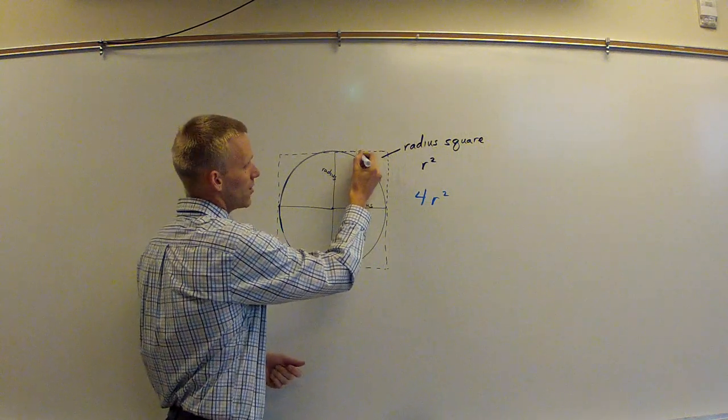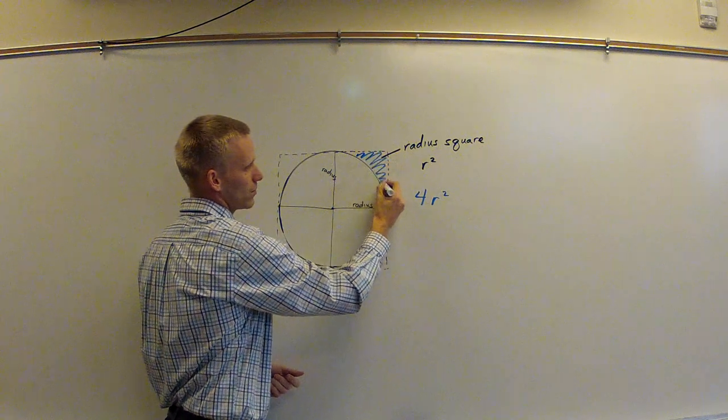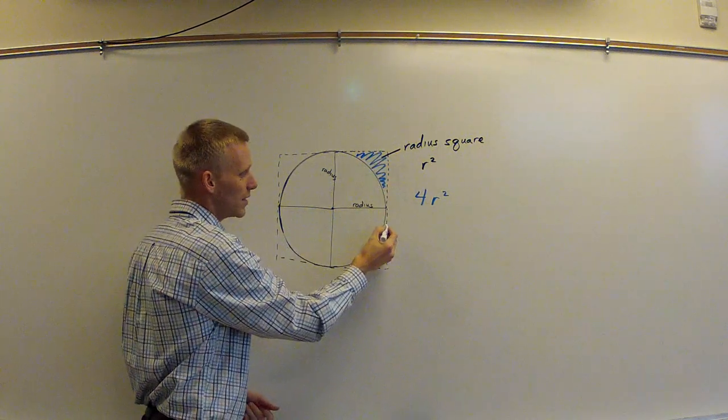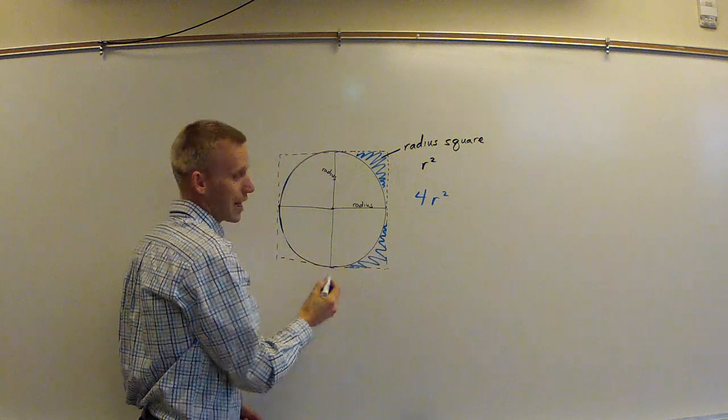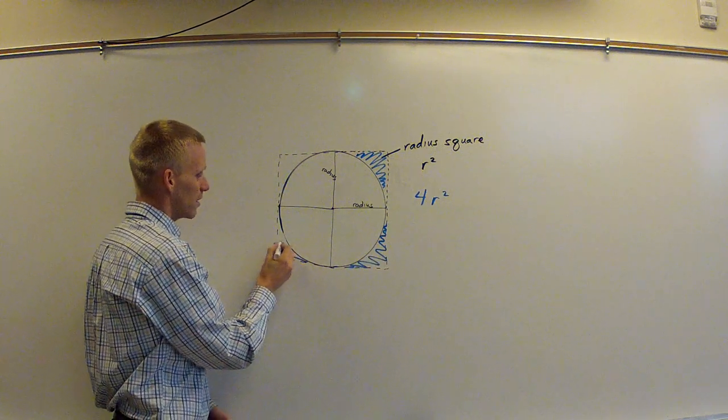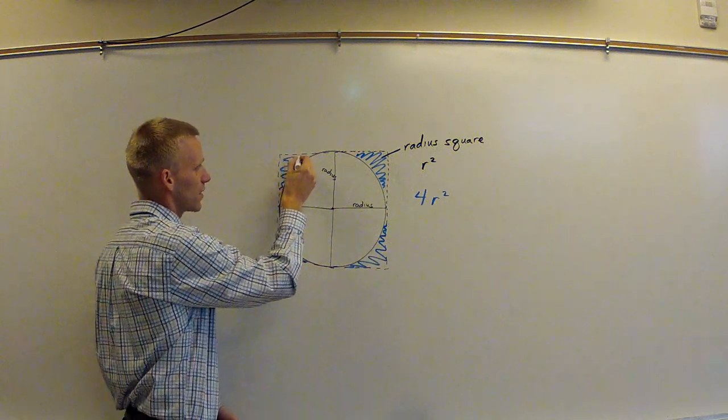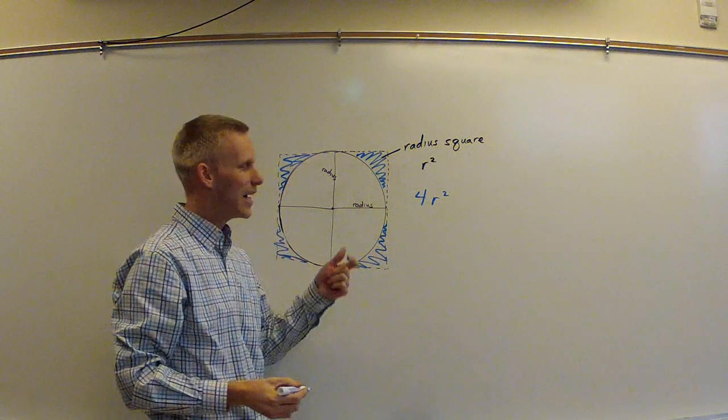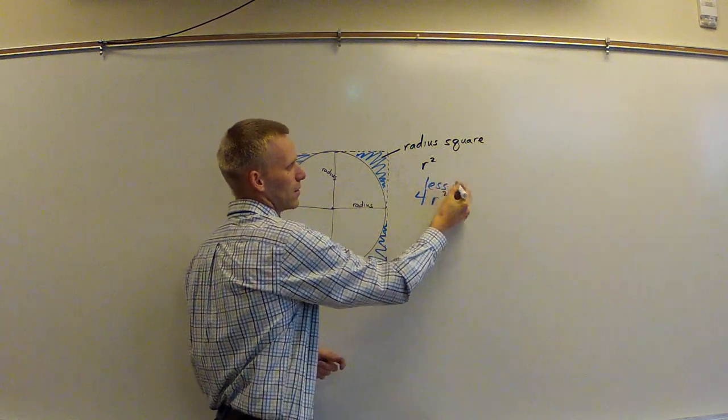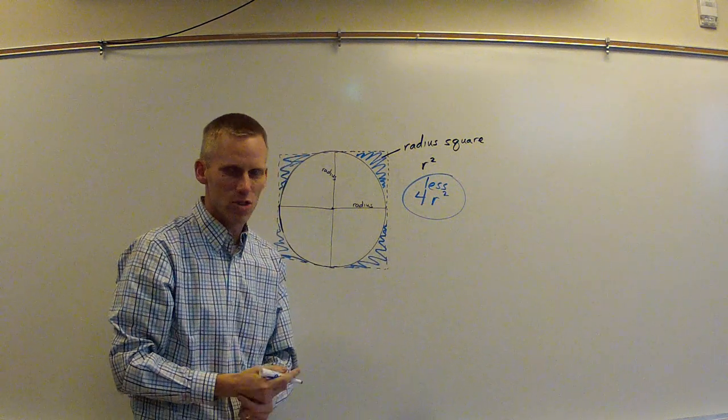Because we've included this area, which is obviously not part of the circle. We've included this area, which is not part of the circle, and this area, and this area. So obviously, it's got to be a little bit less than four radius squares.